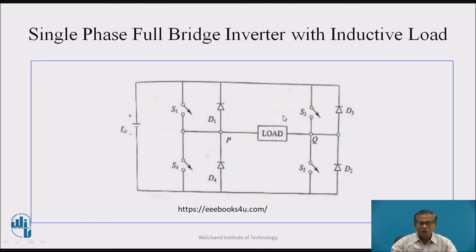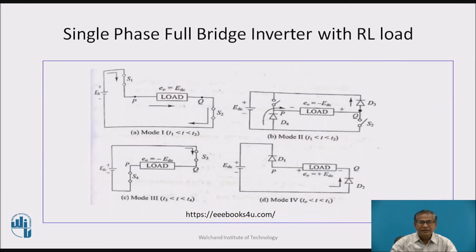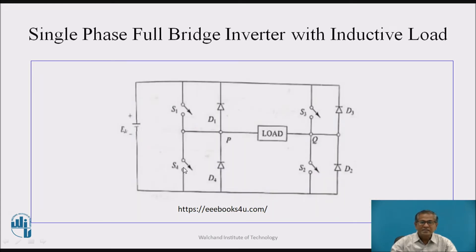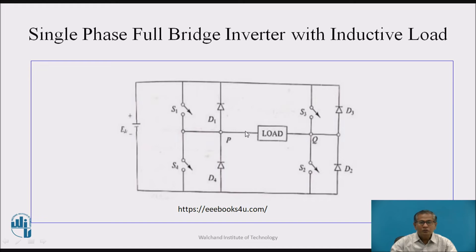At t = T3, gate pulses are applied to S3 and S4. S3 and S4 conduct and act as short. The direction of load current is: source → S3 → Q → load → S4 → back to EDC. The direction of load voltage is exactly opposite to the previous one and the direction of current is negative. Negative half cycle appears across the load. Some fraction of energy is stored in L and most energy is delivered to the load; load polarity is Q positive, P negative.